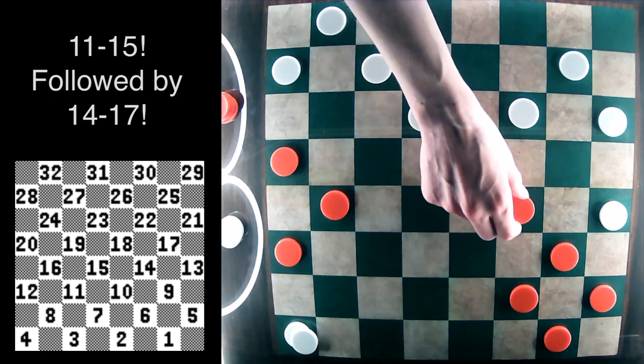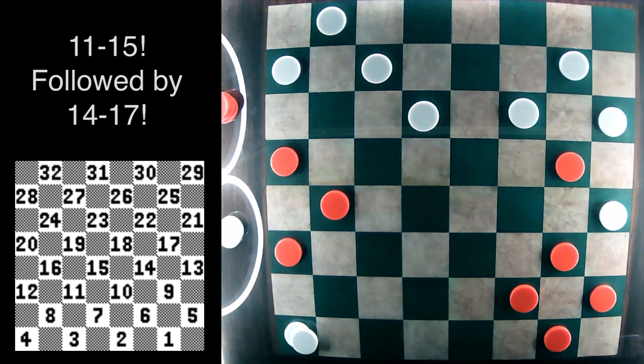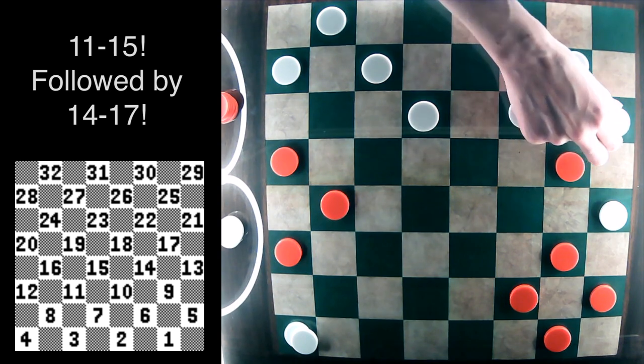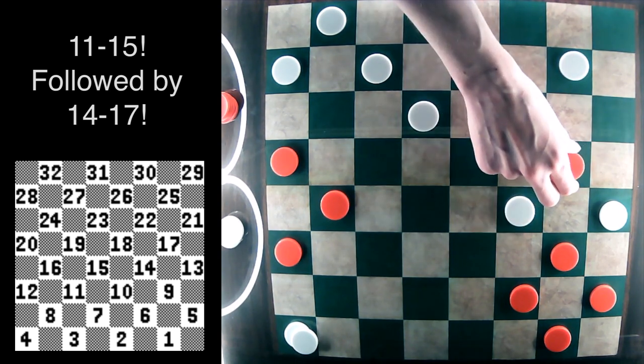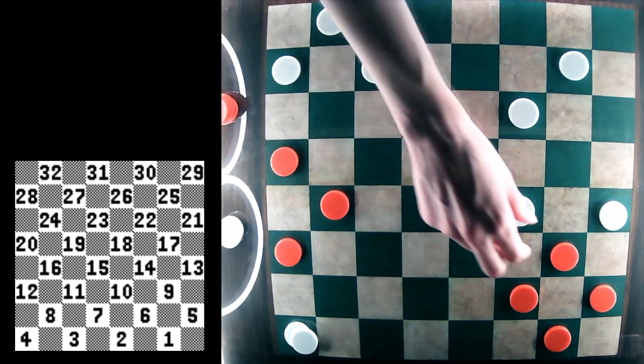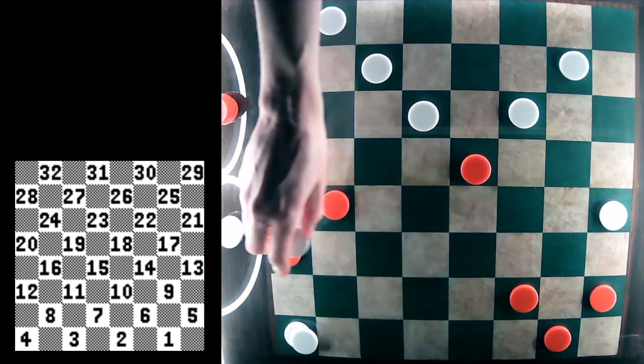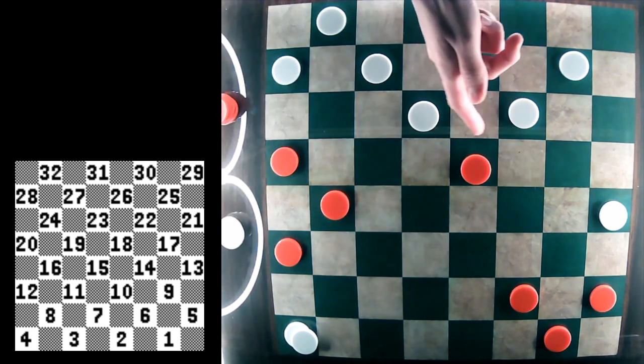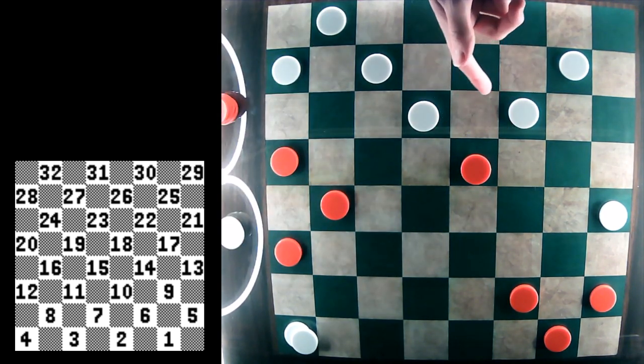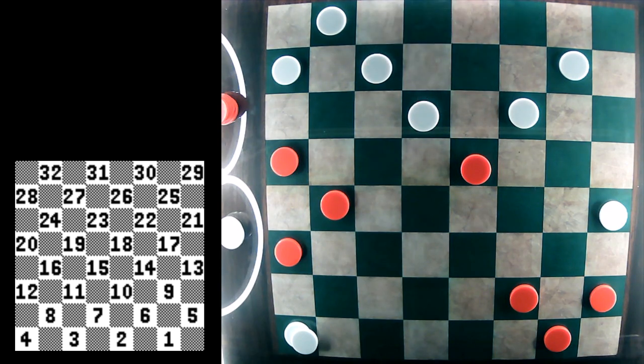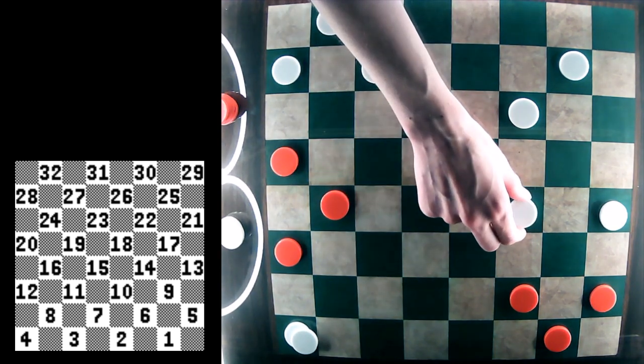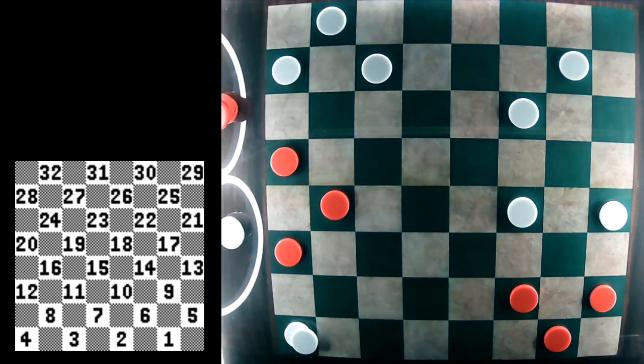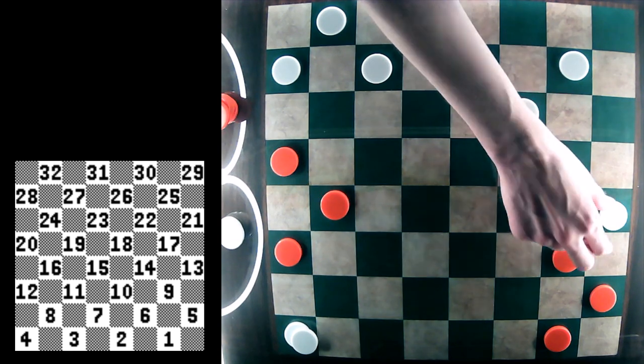Red is now going to play 14-17. White is going to jump. Red is going to jump back. And then it doesn't matter which route white jumps because it results in the same. But let's say it jumps 23-14. And then after 6-9, I'm sure all of you can see this triple jump now.